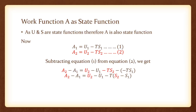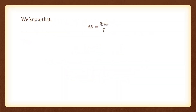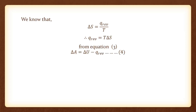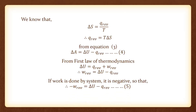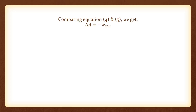Subtracting equation 1 from equation 2 we get delta A equals delta U minus T delta S (equation 3). We know that delta S equals Q divided by T, therefore Q equals T times delta S. Replacing T delta S by Q, equation 3 becomes delta A equals delta U minus Q. From the first law of thermodynamics, delta U equals Q plus W, so W equals delta U minus Q. If work is done by the system it is negative, so minus W equals delta U minus Q. Comparing equations, we get delta A equals minus W, or minus delta A equals W.